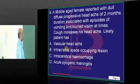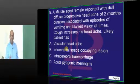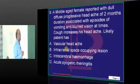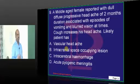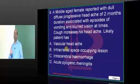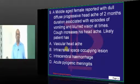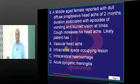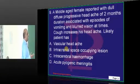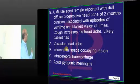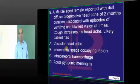A middle-aged female with headache which occurs on jolting the body and by coughing — coughing increases the headache. On telephone, what is your diagnosis? Obviously there is raised intracranial tension. Raised intracranial tension is more likely with an intracerebral space-occupying lesion in the calvarium.